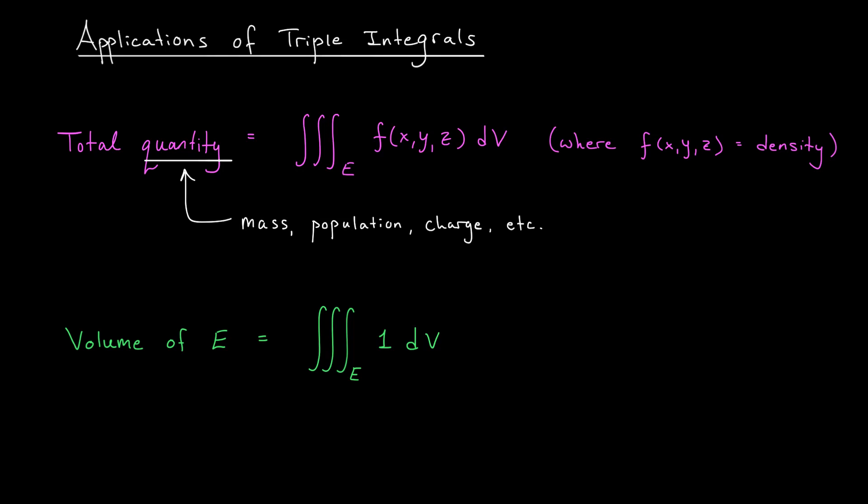You can actually see this by returning to the definition of the triple integral. When we integrate the constant function 1, we're just adding up a bunch of tiny little volumes throughout the solid E. So perhaps it makes sense that the result of this computation is the volume of E itself.